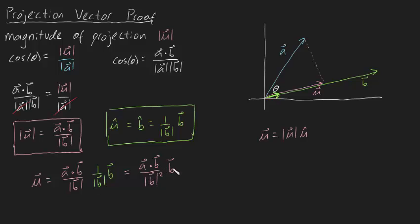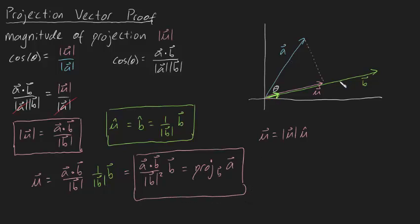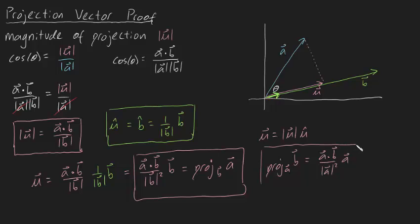Before I end this video, I just want to note that mathematicians don't actually write this vector as U — they write it as PROJ, short for projection, of A onto B. This is the formal mathematical way of writing it. You could also derive, going through the same process, the projection of B onto A, or use the symmetry of the situation. It would simply be A dot B divided by the magnitude of A squared, times the vector A. I hope that made sense, guys. This is the projection vector formally derived.